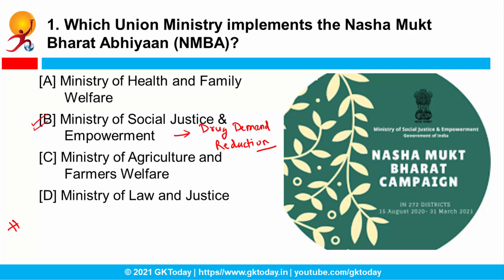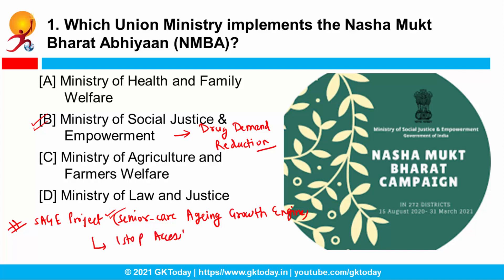Apart from it, few days back Thawar Chand Gehlot launched the SAGE Project — Senior Care Aging Growth Engine. This project aims to select, support, and create one-stop access to elder care products and services provided by credible startups. There is also one more app from this ministry: the Saugam Ibarat app, a crowd-sourcing mobile application developed to enhance accessibility under the Accessible India campaign.